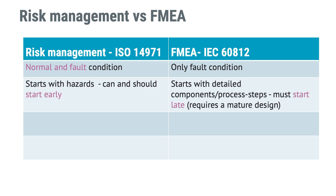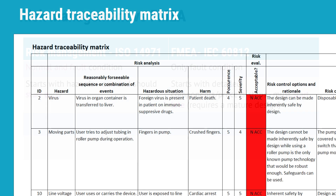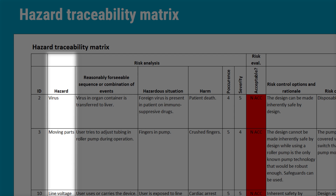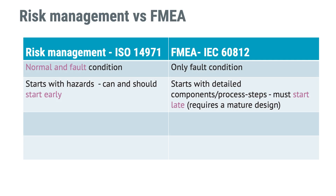If you remember the hazard traceability matrix I showed you as an example of what risk management is about, you've seen that we started with hazards on the left-hand side in the table. Hazards are potential sources of harm. The good thing about starting your risk management work with hazards is that in most cases you can identify the most important risks without doing any detailed design whatsoever. In fact, you're likely to be able to come up with quite a few important risks already in the conceptual stage of product development. Typical hazards could be viruses or bacteria, electricity, sharp edges, or toxic residues from production. Finding risks at an early stage usually saves a lot of money compared to finding them and having to mitigate them later on — or even worse, after you've released your product to market.